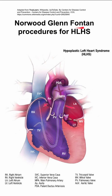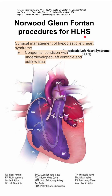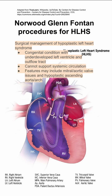A quick look at the Norwood-Glenn-Fontan procedures for hypoplastic left heart syndrome. Hypoplastic left heart is a congenital condition with an underdeveloped left ventricle and underdeveloped left outflow tract that cannot support the systemic circulation. These patients might have mitral or aortic valve issues, and they'll have a hypoplastic ascending aortic arch, unable to support the systemic circulation.